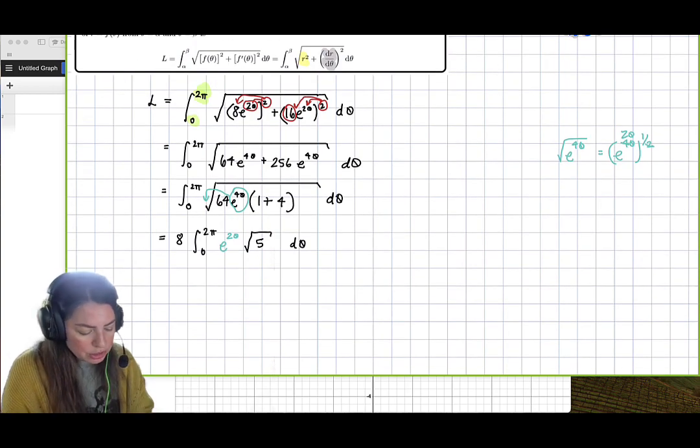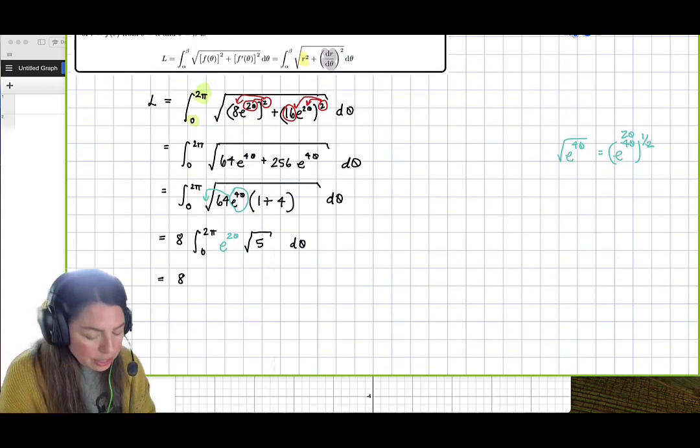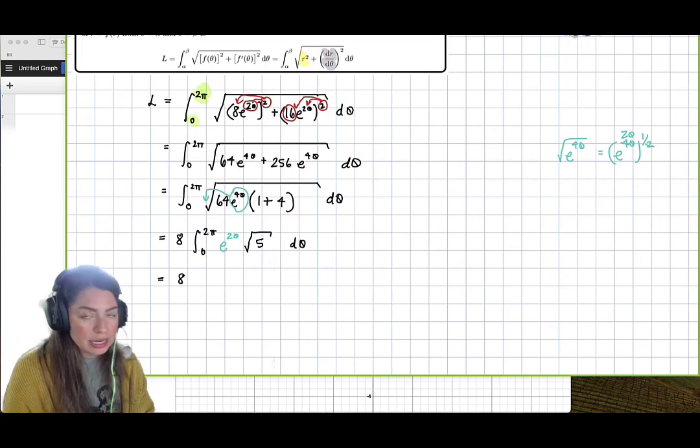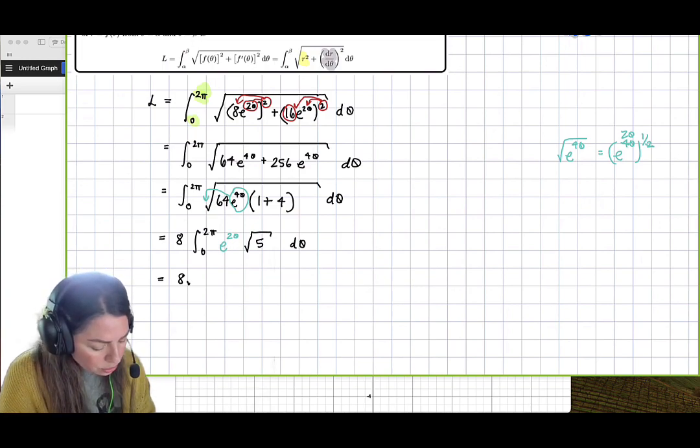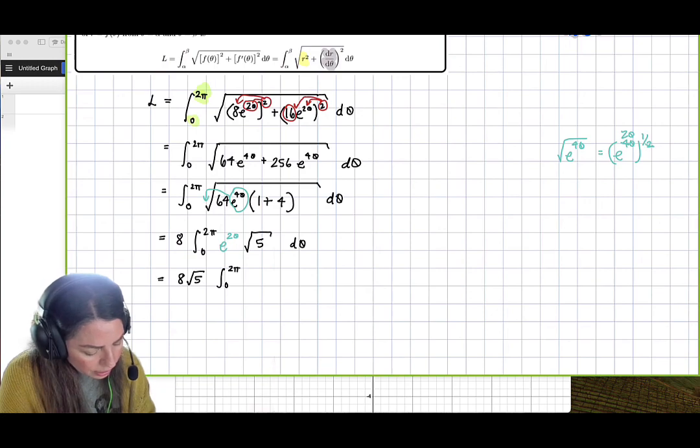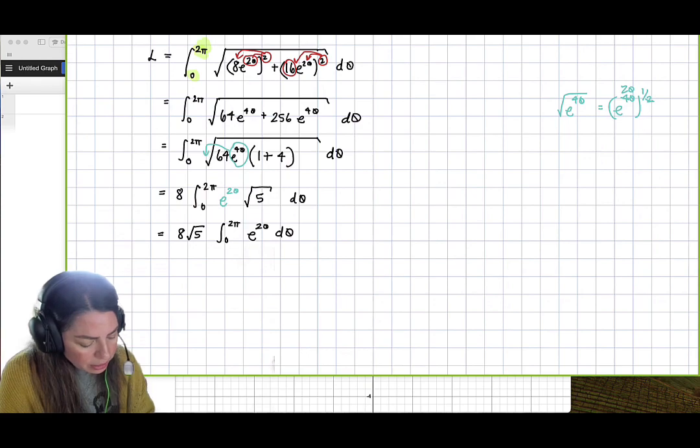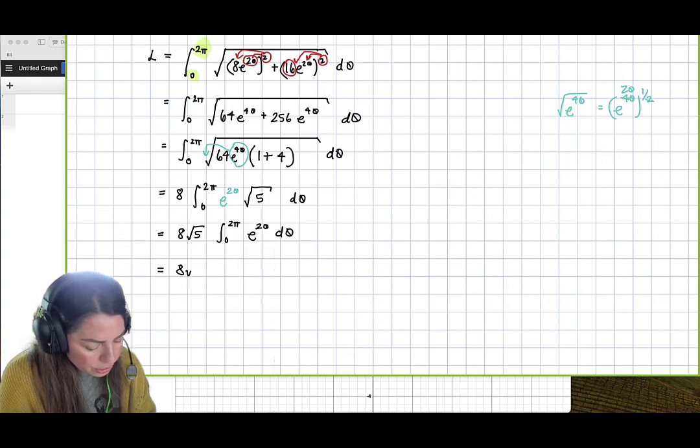Now we still have constant multiple rules. So let's go ahead and just take out that square root of 5. There's no theta in it. So it'll be 8 square root 5 definite integral 0 to 2 pi of e to the 2 theta d theta. And notice that this becomes a really nice, simple integration problem.